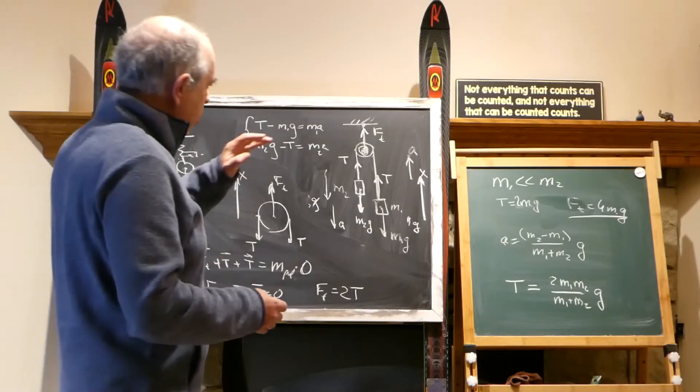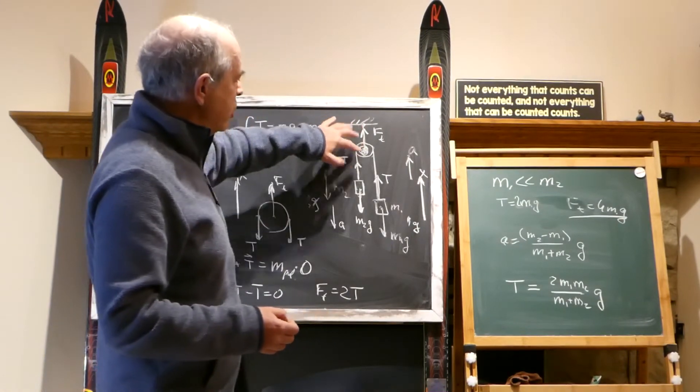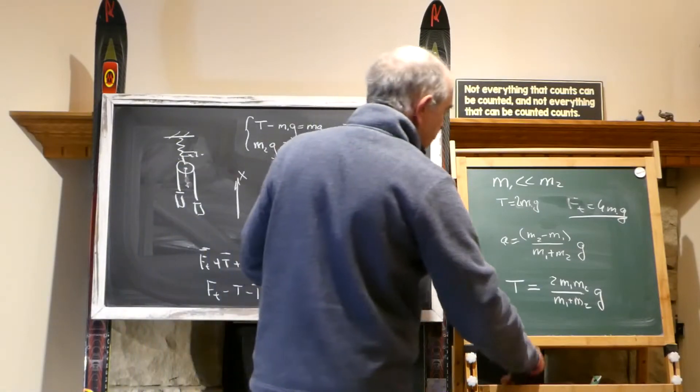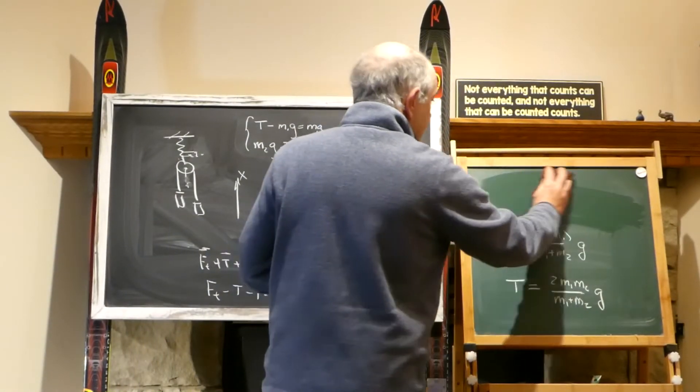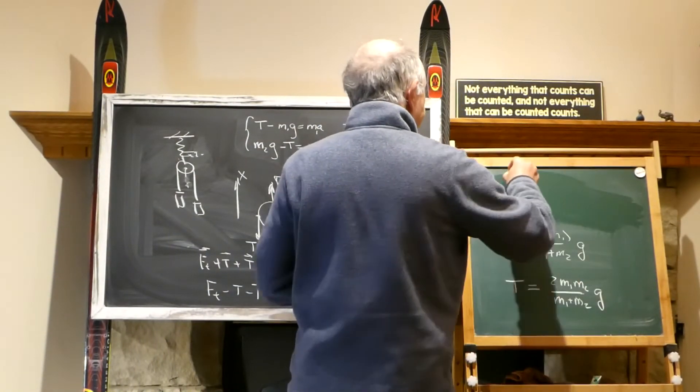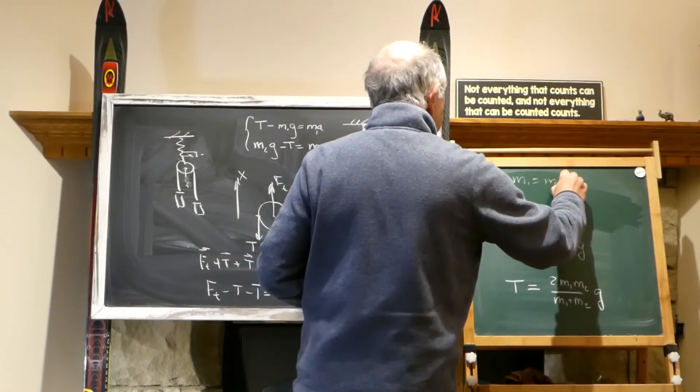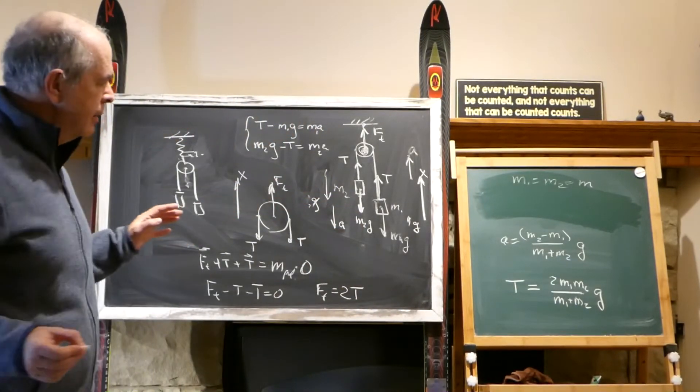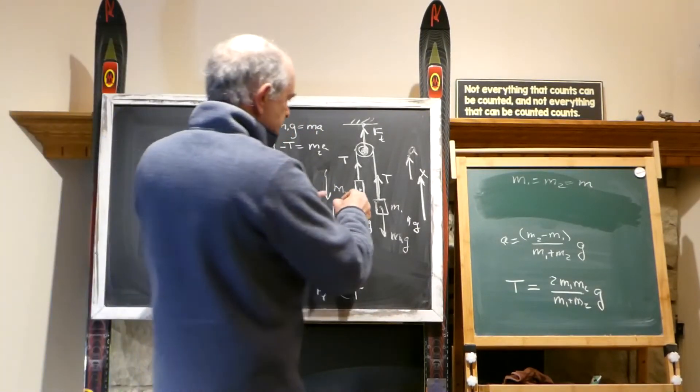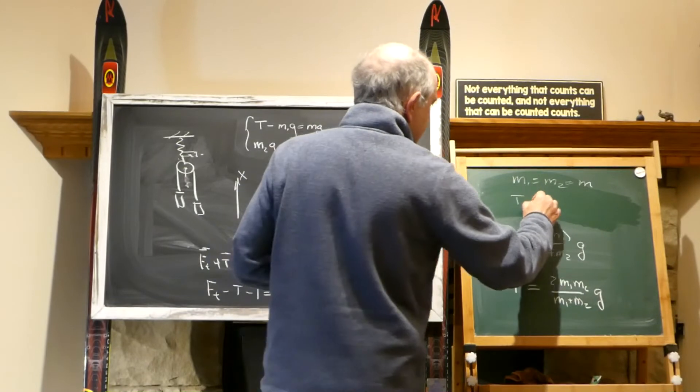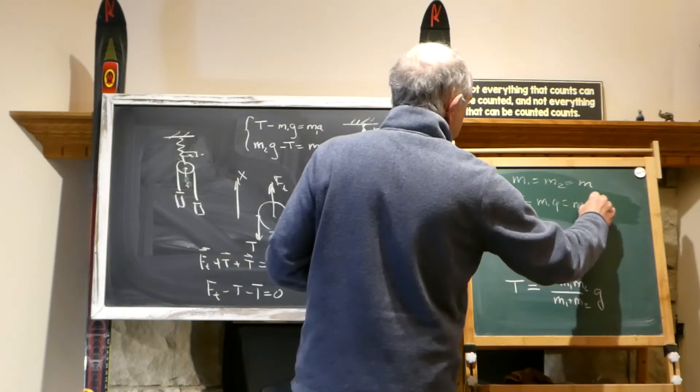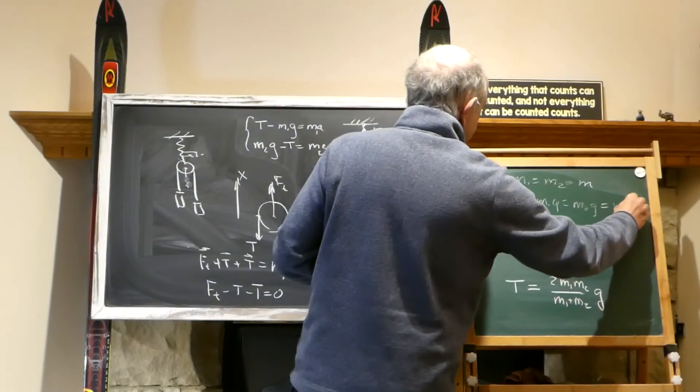So no way that F tangent here would be equal M1g of M2g. On the other hand, if M1 equal M2 equal M, then everything is balanced. There are no accelerations. This T is equal M1g. This T is equal M1g. And it is absolutely the same as M2g. And it is the same as Mg.